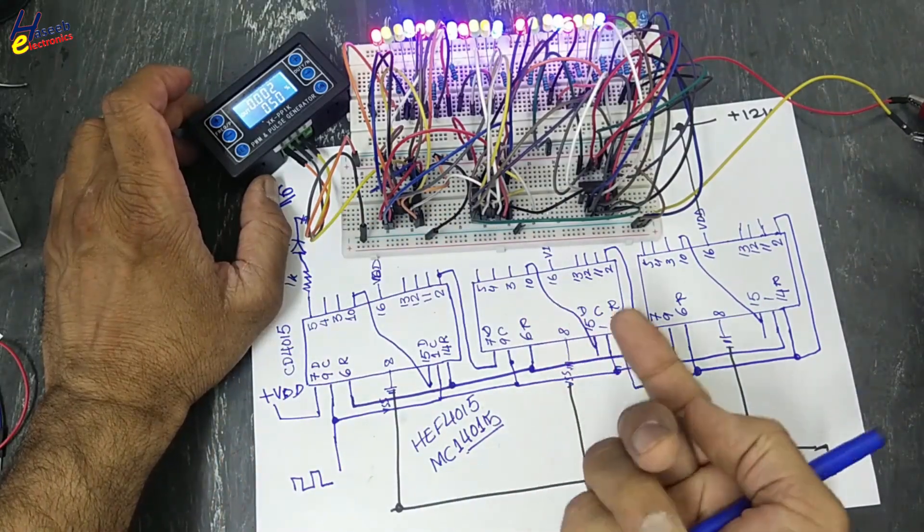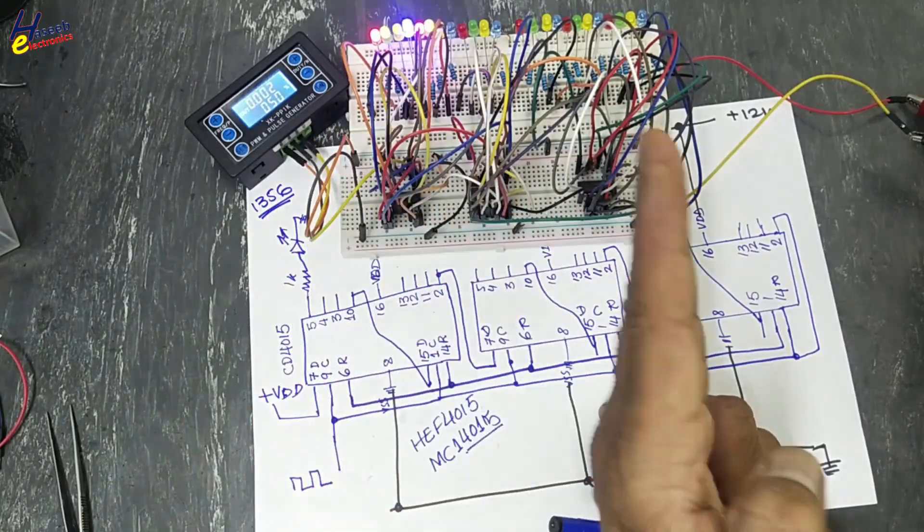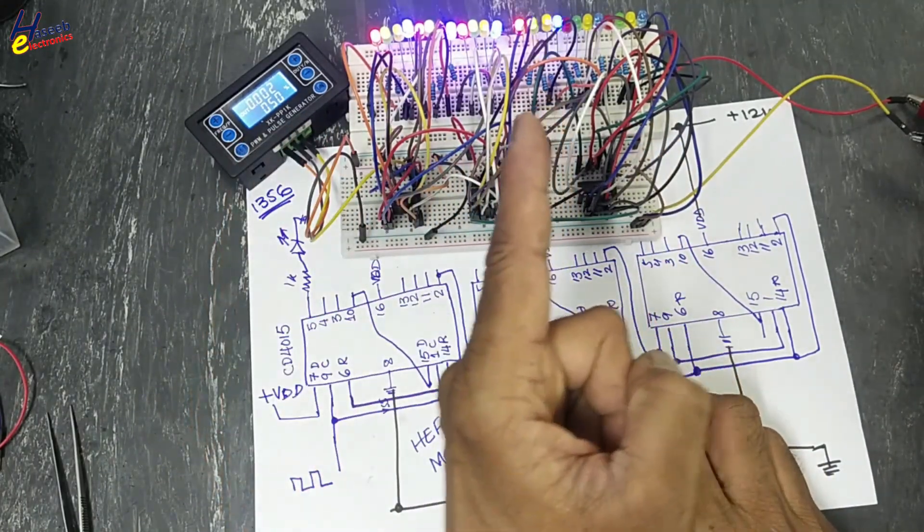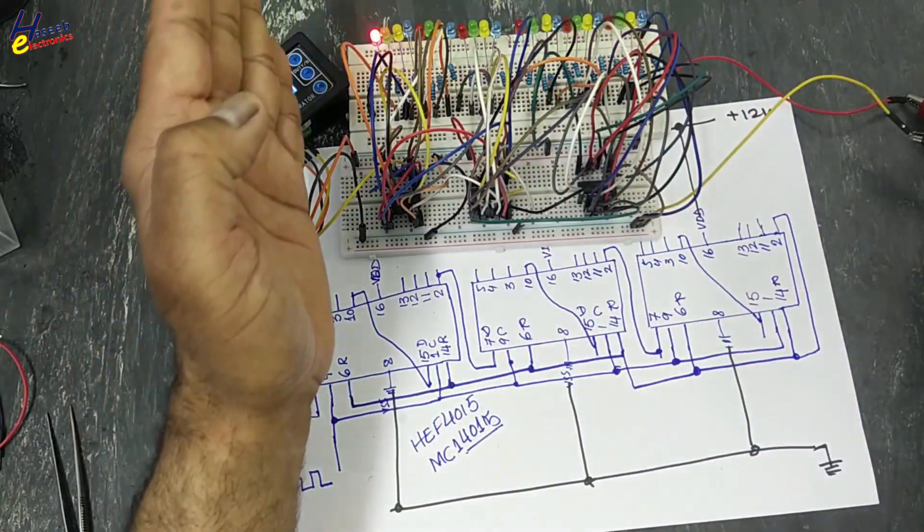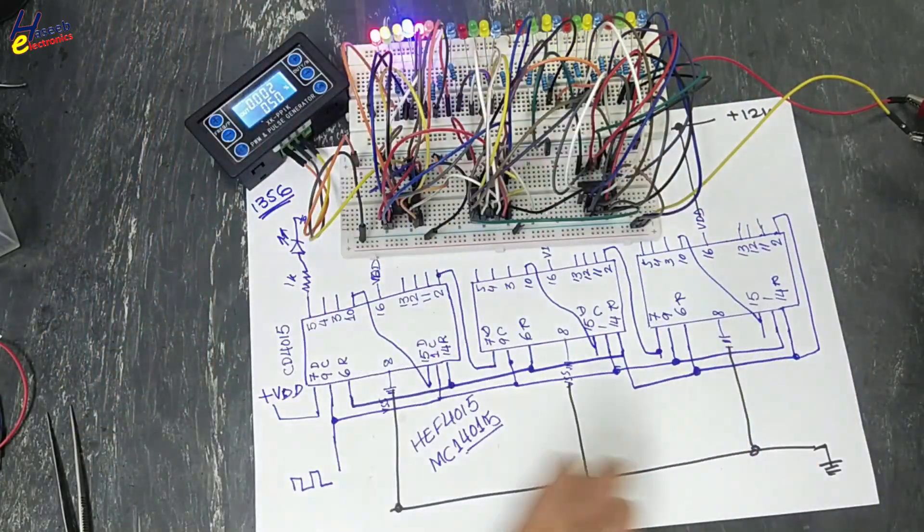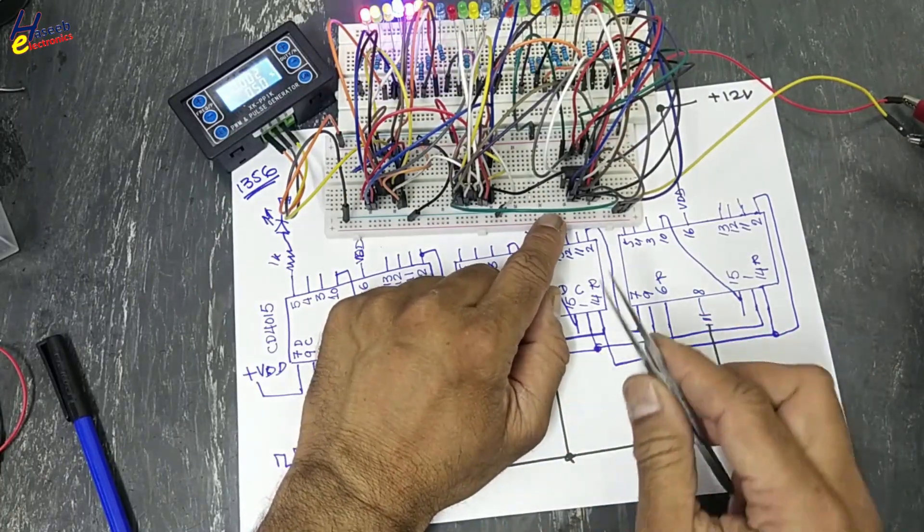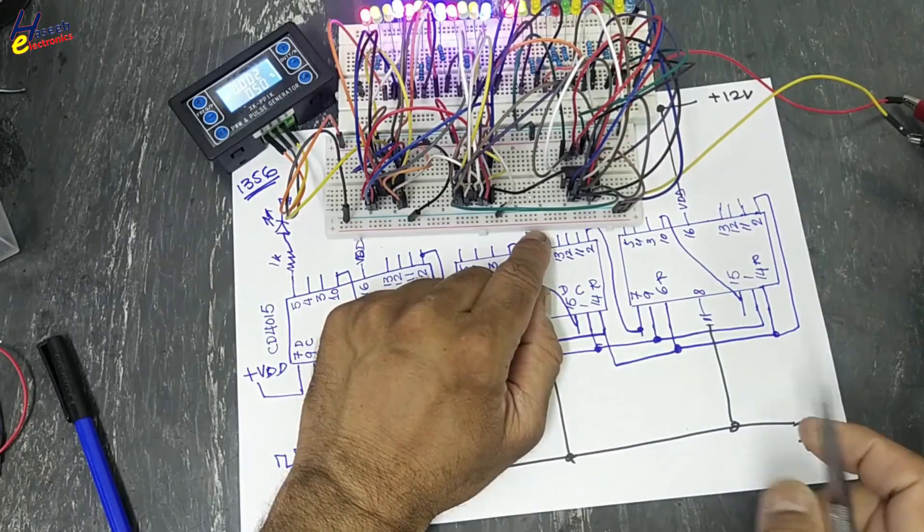But with this modification, we will fill it with sequence and we will clear it with the same sequence. Turning on in this direction, then it will start turning off from this direction. Let's start. To perform this action, we will remove reset pin. That is making a force clear.